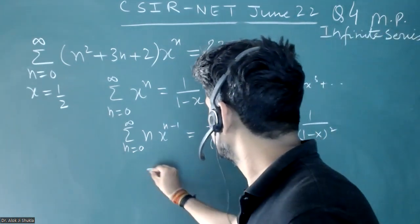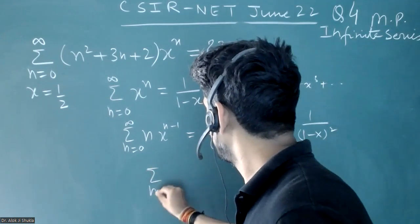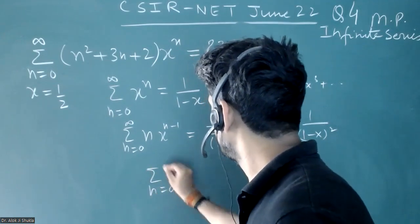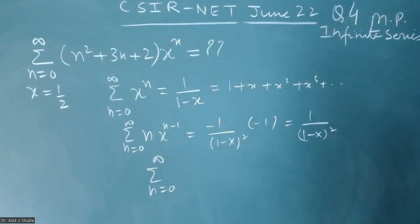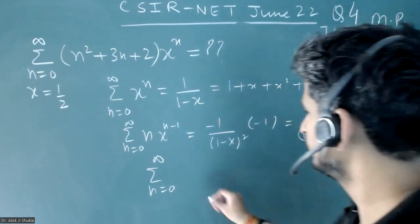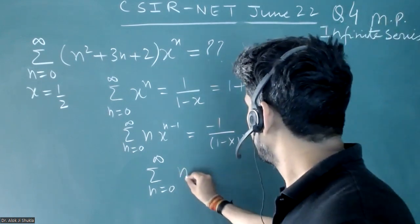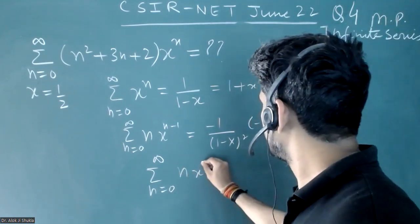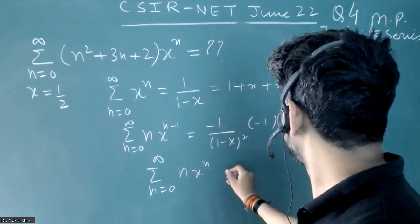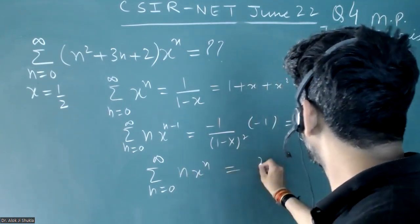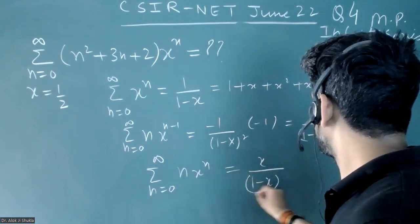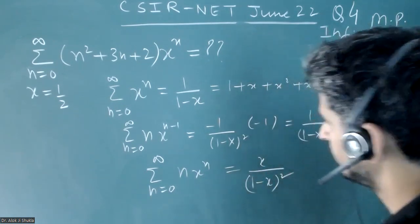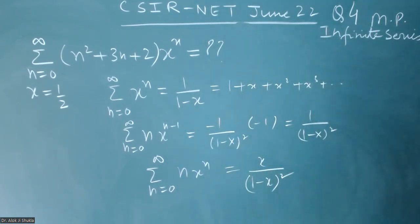If I write it as summation n equal to zero to infinity and multiply both sides by x, it will become: summation of n·xⁿ equals x/(1-x)².